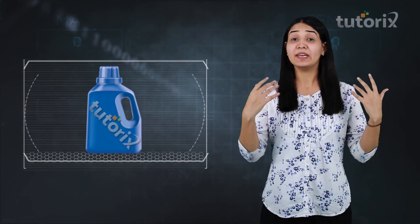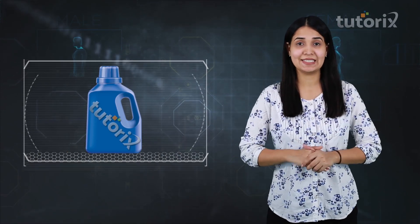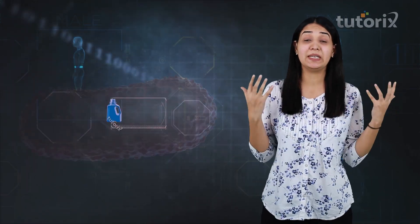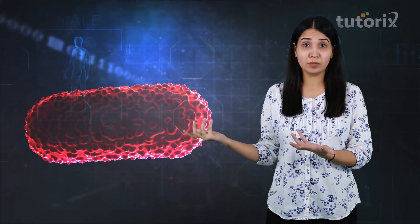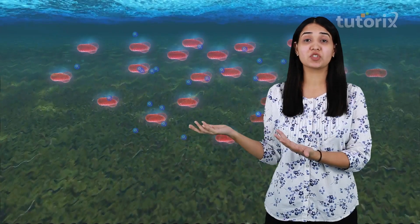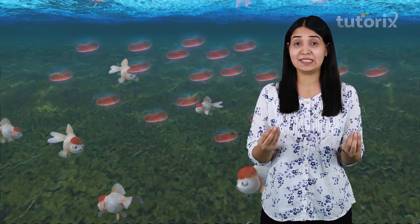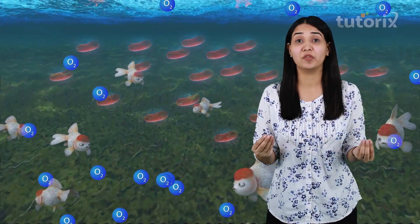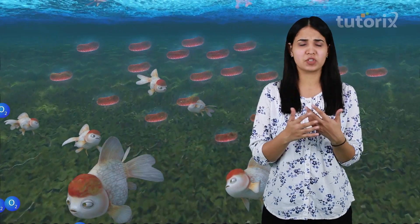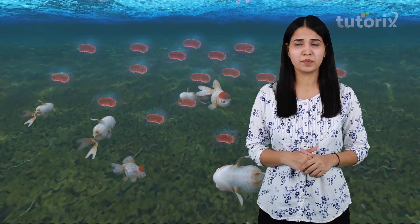Now again, for these biodegradable substances, certain bacteria can decompose them. The same thing happens as we discussed in case of organic waste — they take up the oxygen dissolved in water and thereby it is harmful for the aquatic life, because they are not going to get enough oxygen for themselves.